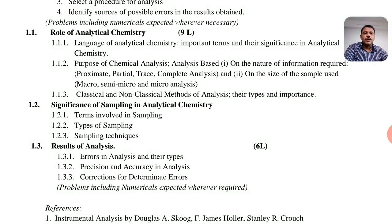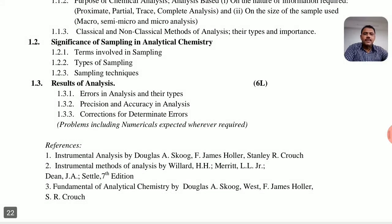Topic 1.2 is the significance of sampling in analytical chemistry. It covers the terms involved in sampling, types of sampling, sampling techniques, and how to sample. This is a very important topic; the entire sampling process is very useful in the pharmaceutical industry.